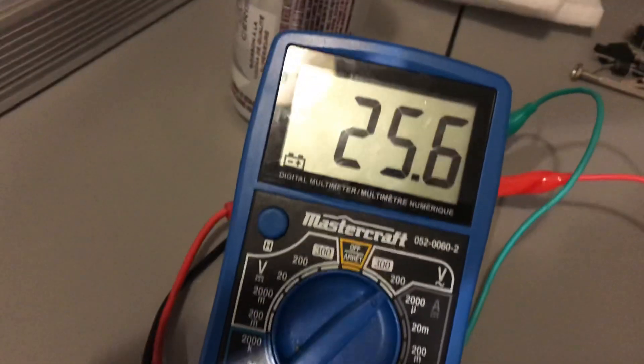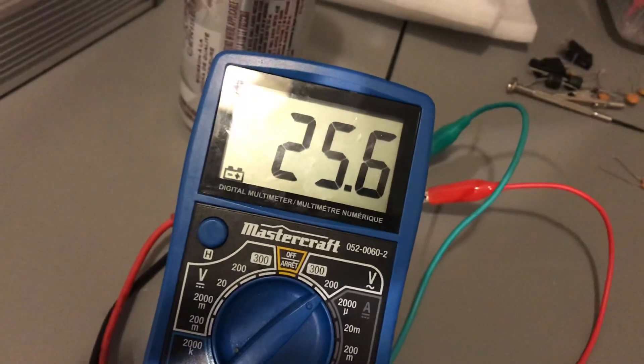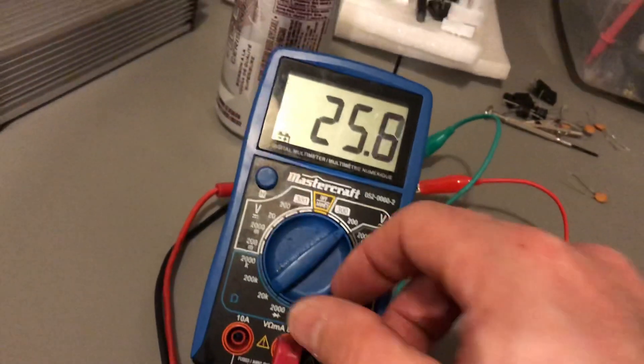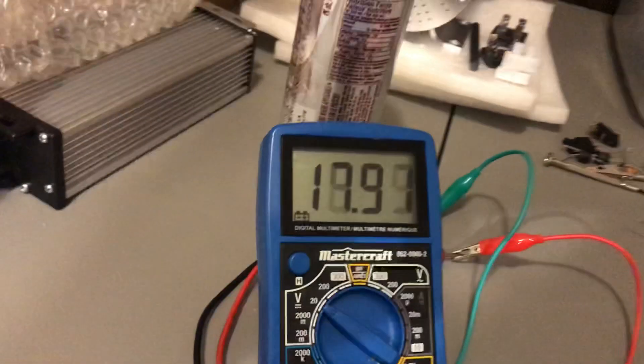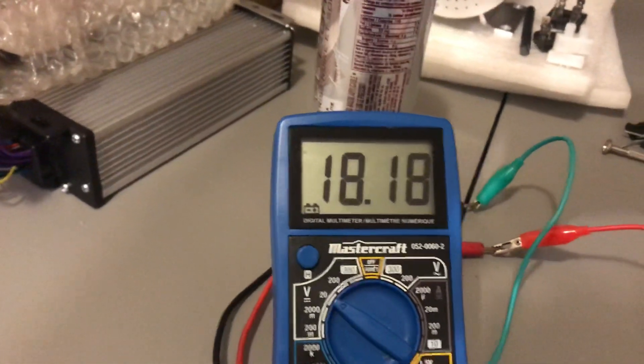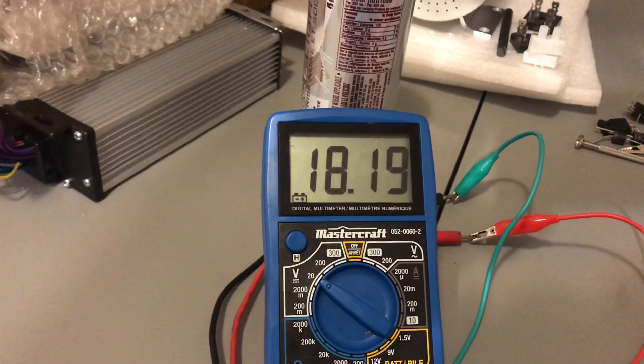But now look at the volts. We got 25.6 AC, 0.7 AC and DC. We now have 18. So that's the second test.